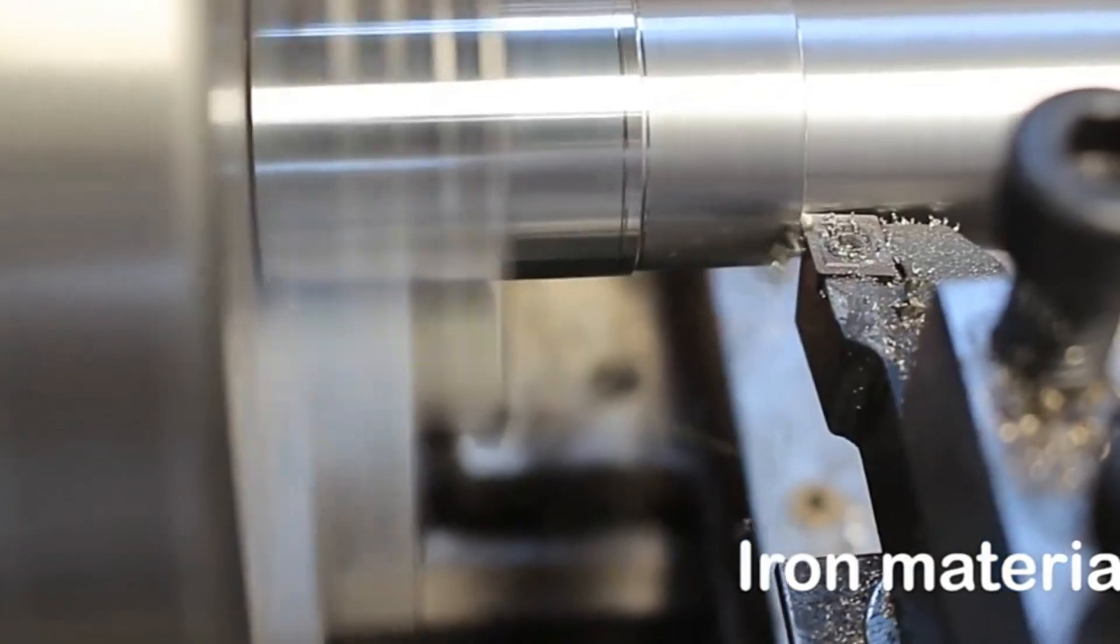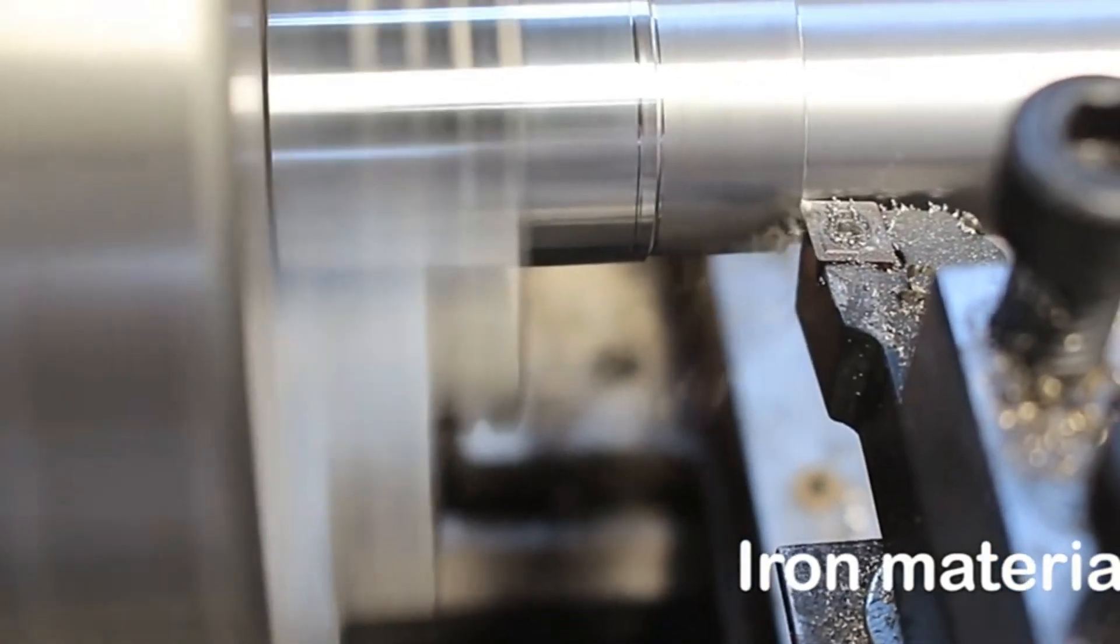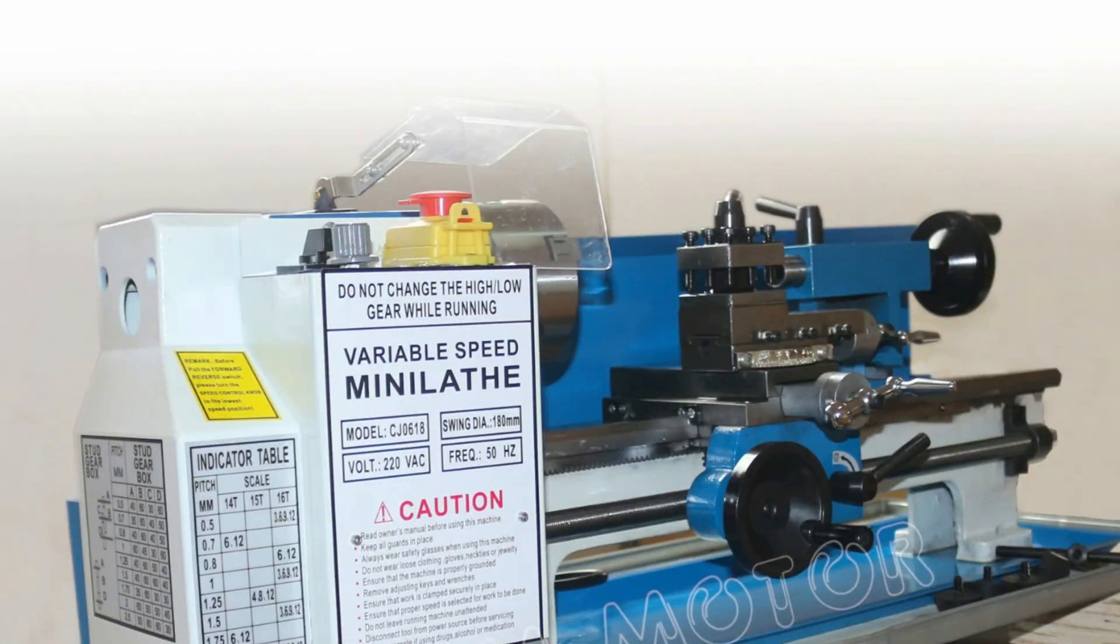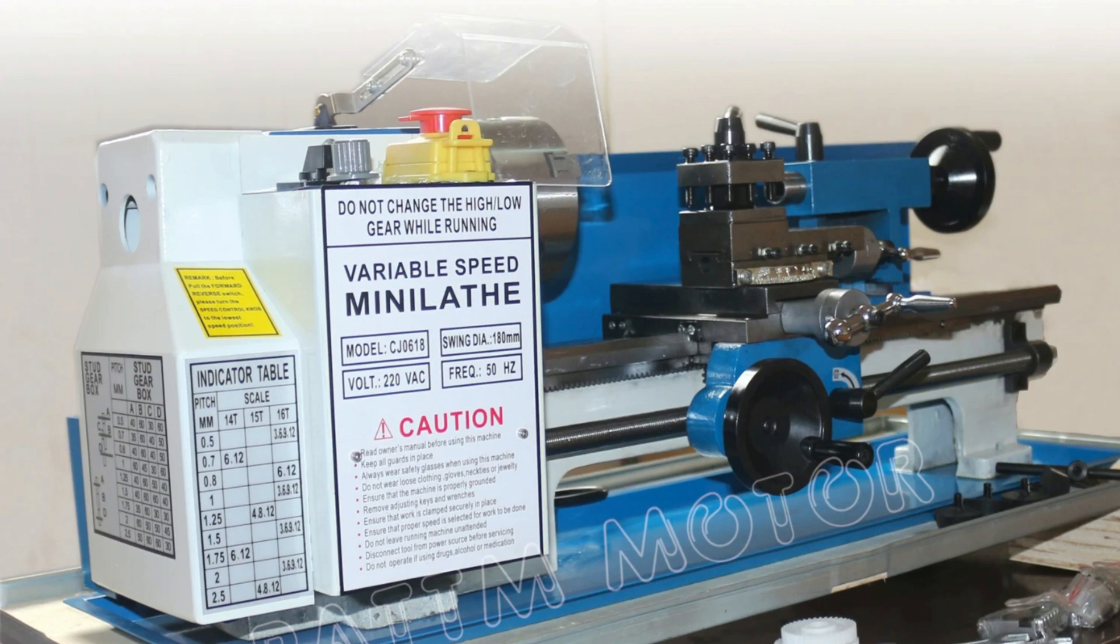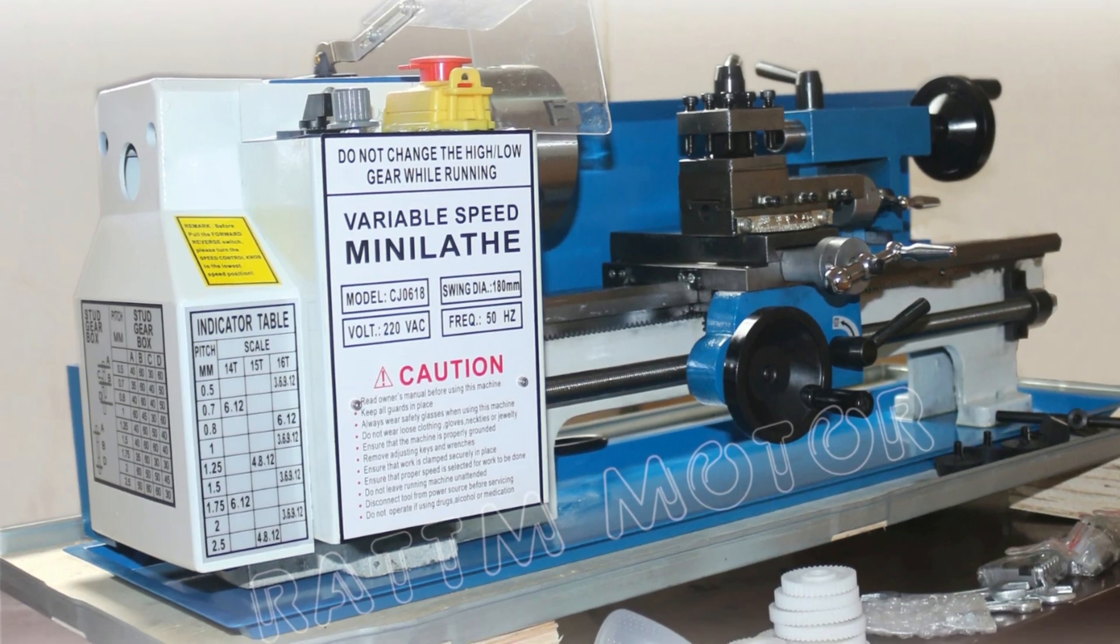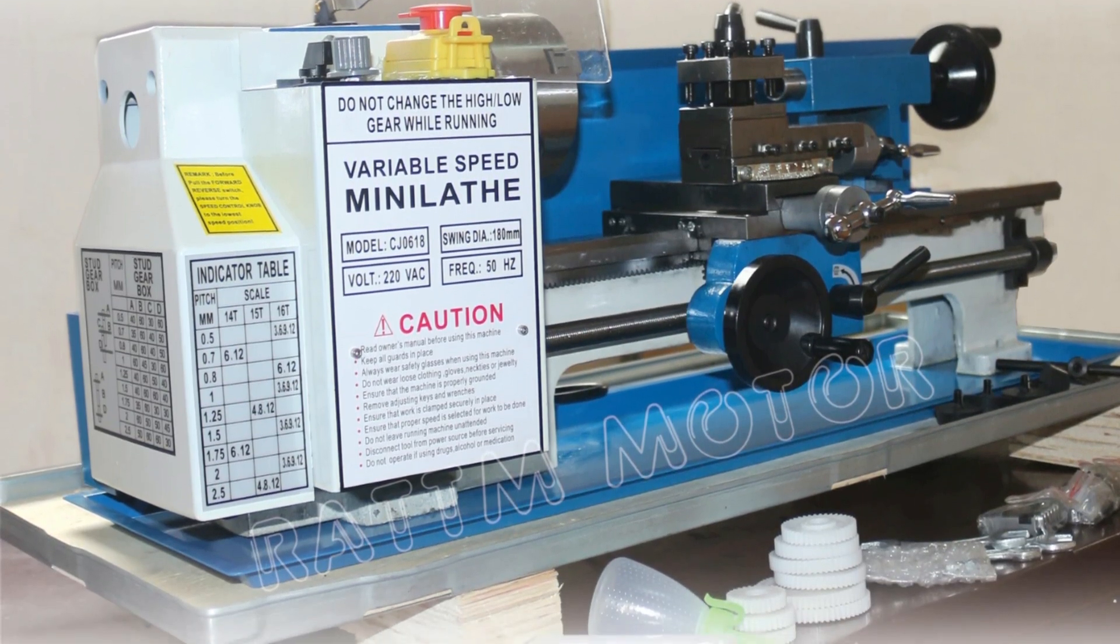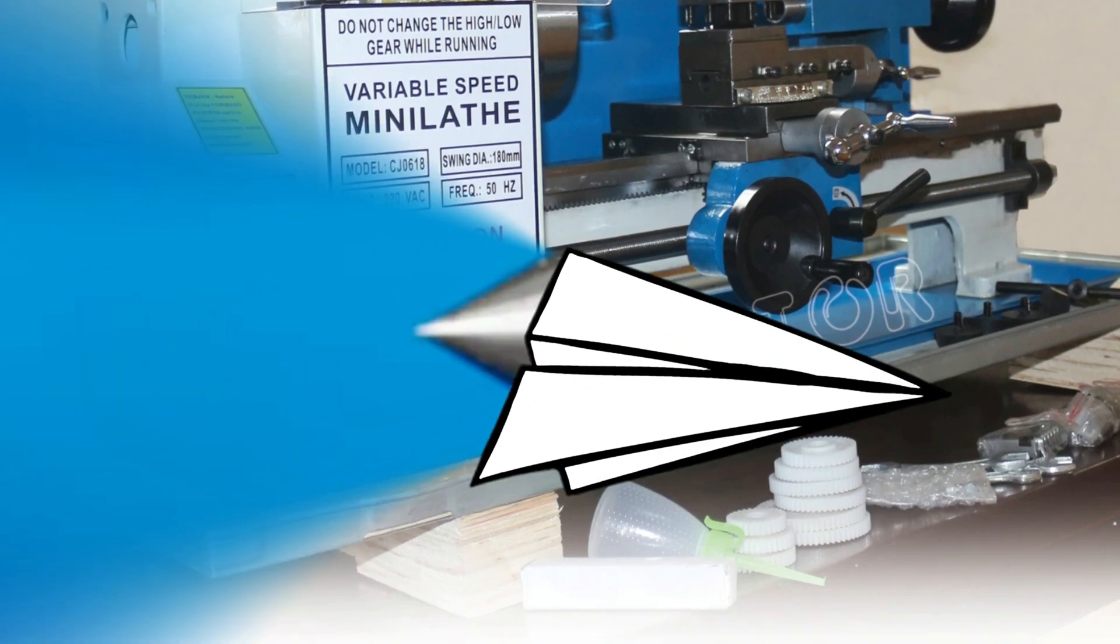Equipped with a 0.75 HP slash 550W motor, it can handle tough materials like steel and aluminum with ease. The lathe is compatible with various tooling and features a MT3 spindle taper and MT2 tailstock taper for secure workpiece holding.